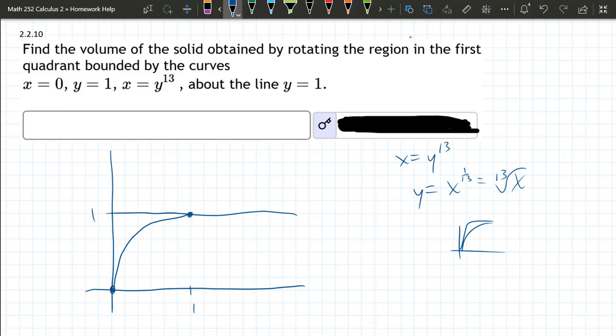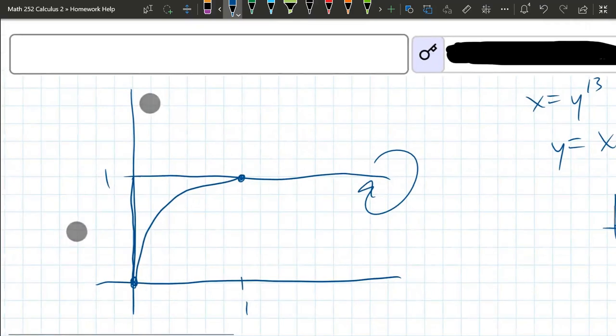We're rotating about the line Y equals 1. So we're rotating about there. We have the Y axis as another boundary. So it's this wedge right here. I'm drawing one cross section. We're in the disk section 2.2, so my cross sections need to be perpendicular to my rotation axis like that. And it's going to revolve into a disk or a circle.